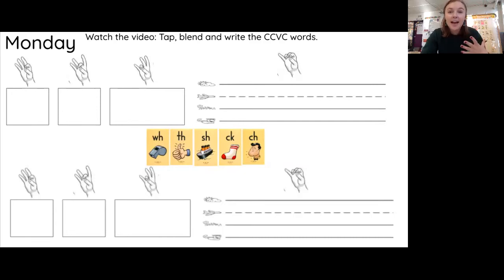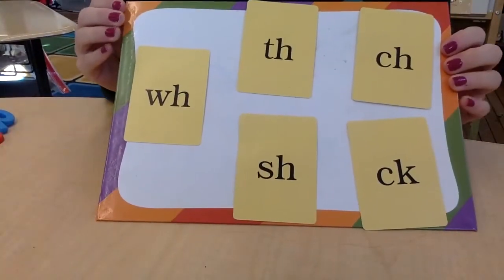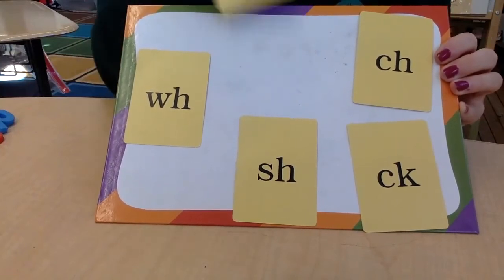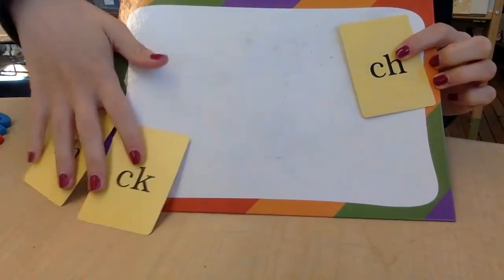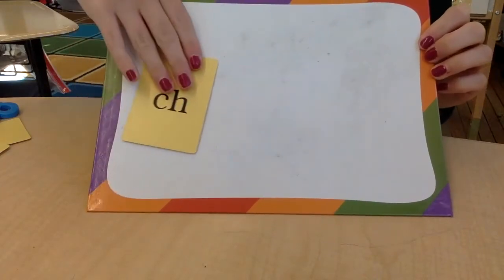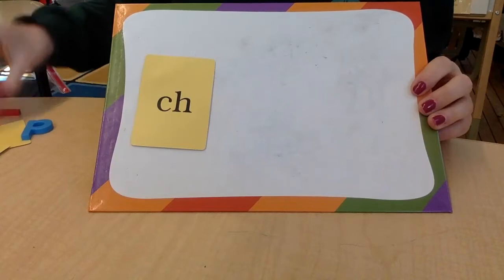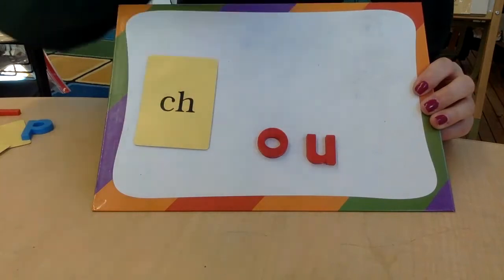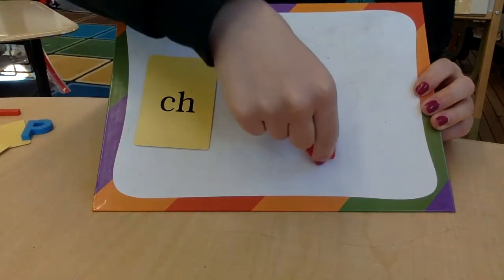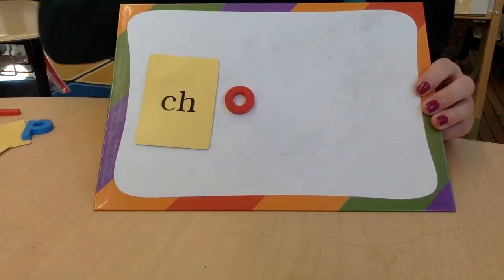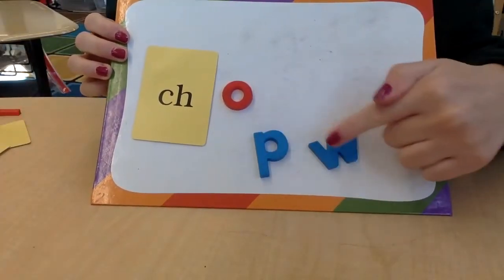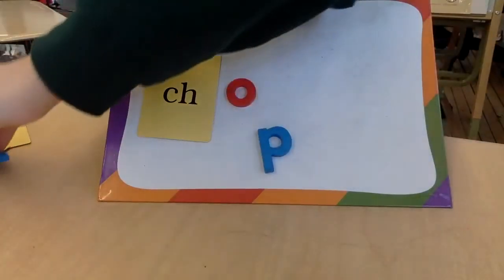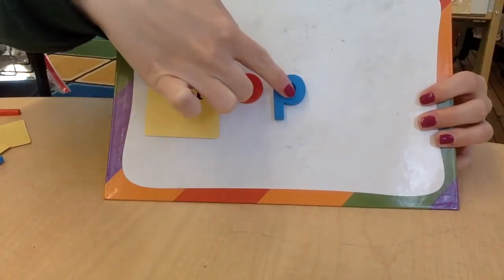Now that we know the sounds, we need to build it. The first sound says CH, so which digraph are we going to use for the CH sound? It's not WH — that says W. We're looking for CH. That's right, it's this one. Next we need a letter that says the AH sound — is it the O or the U? It's the O — octopus — AH. And last we need P. CH — AH — P — chop.